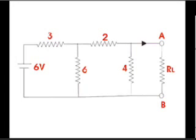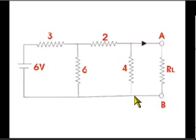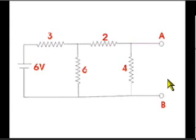If we go through one example, that will be clear to us. Say, in the network, we have to calculate current through the resistor RL across the terminals A and B. For that, we first remove the resistor RL from the terminals A and B of the network.